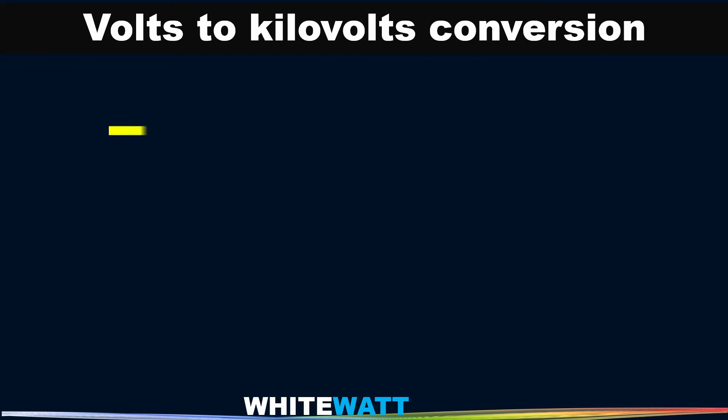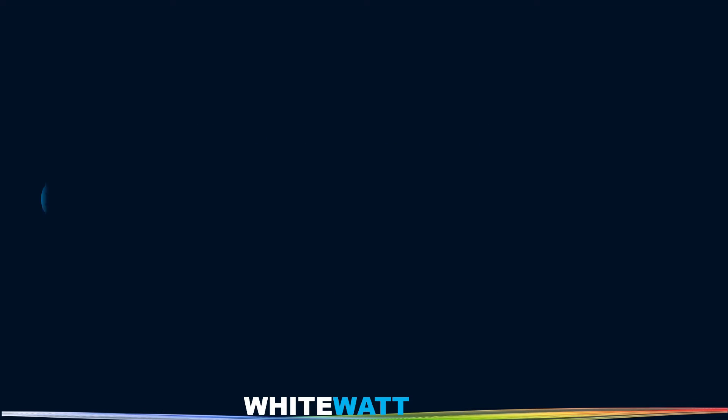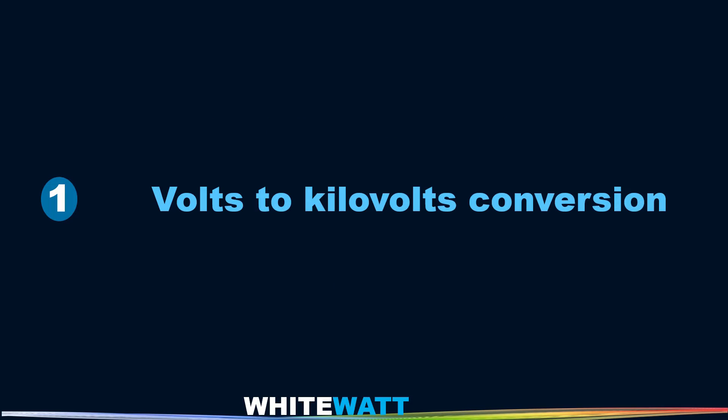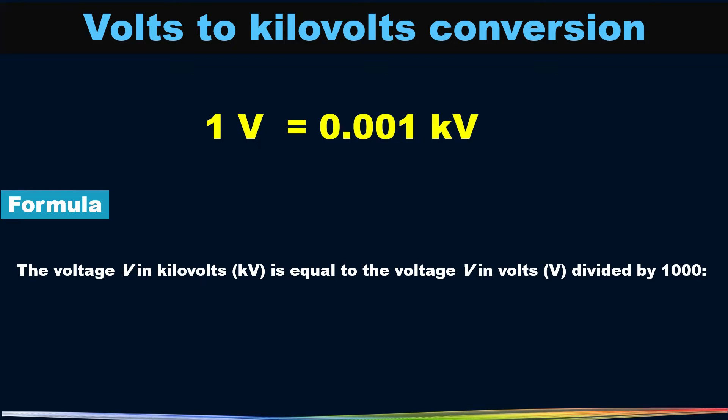Volt is denoted by V and kilovolt is denoted by kV. First, we convert volts into kilovolts. We know that 1 volt is equal to 0.001 kilovolt. So the formula is voltage V in kilovolt is equal to voltage V in volts divided by 1000.